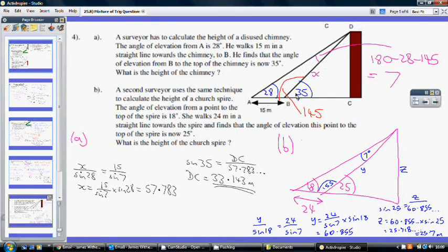We know the 7 is the angle and the 15 is the side. So, basically, if we call this length from B to D X, we can say that X over sin 28 equals 15 over sin 7. Then, multiplying both sides by sin 28, X equals 15 over sin 7 times sin 28, which is 57.783.